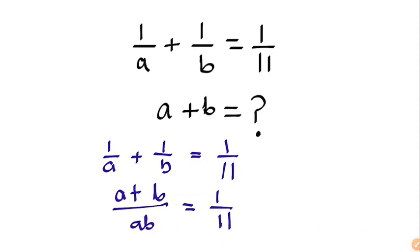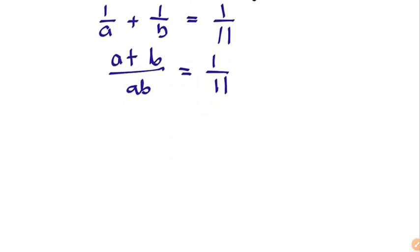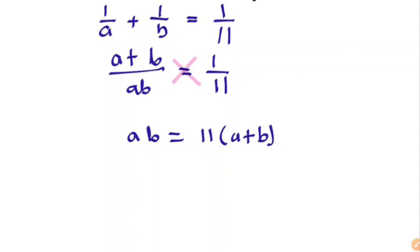Moving on, let's do cross multiplication. If we do cross multiplication, we are going to have a·b equals 11 times bracket a plus b. Now let's open the bracket, so we are going to have a·b equals 11a plus 11b.